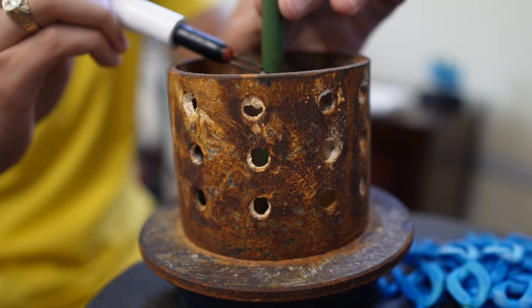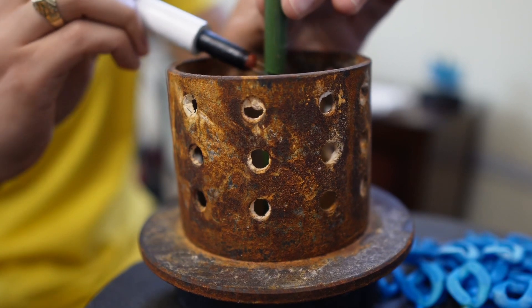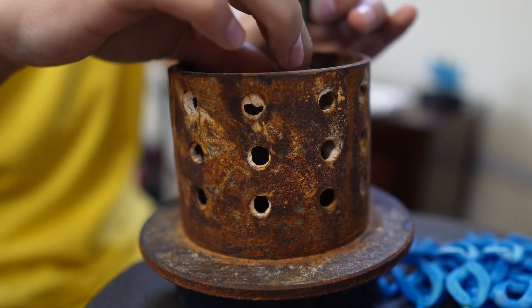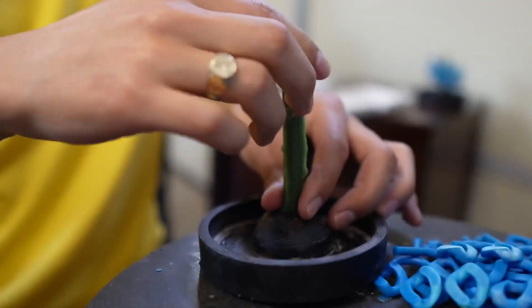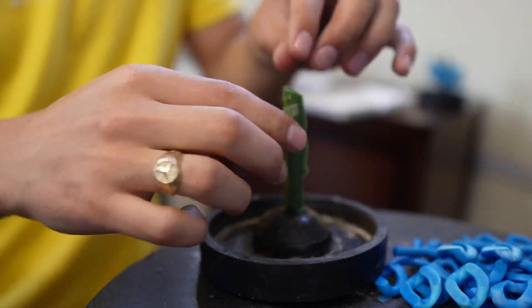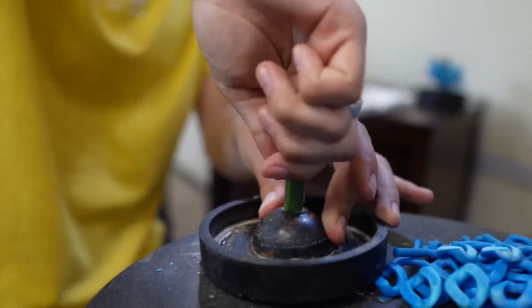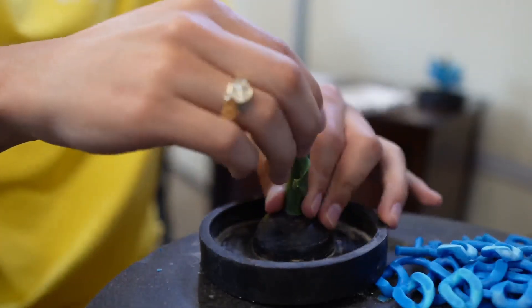So the first step is going to be cutting the wax to make sure that it's the perfect size for the flask. So right here I'm basically just making sure that it was at least a finger over the flask so that none of the precious metal leaks through the flask when casting.